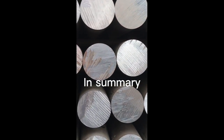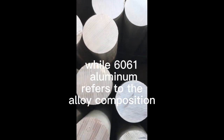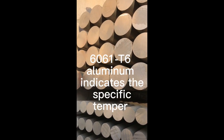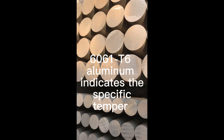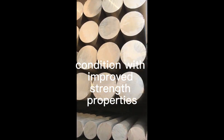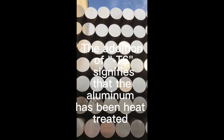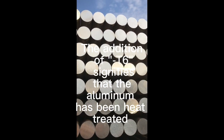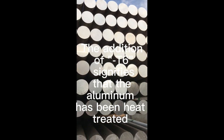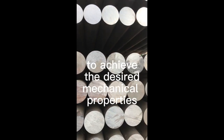In summary, while 6061 Aluminum refers to the alloy composition, 6061 T6 Aluminum indicates the specific temper condition with improved strength properties. The addition of T6 signifies that the aluminum has been heat treated to achieve the desired mechanical properties.